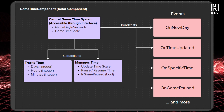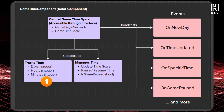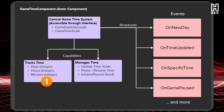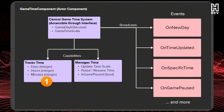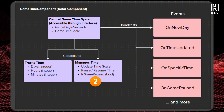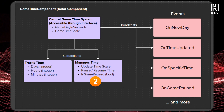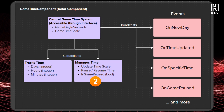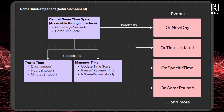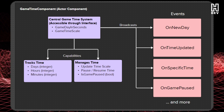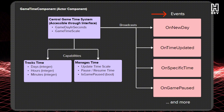From there, the system is going to have two major capabilities. First, the component needs to track time — our days, hours, and minutes. You can customize this as much as you want, but this is what we'll be using for this series. Second, the component will need to manage time, which means it needs functions to change our time scale — speed up or slow down in-game time — and functions to pause and resume time. We're going to use events and event dispatchers to communicate updates and changes to other actors in our game.